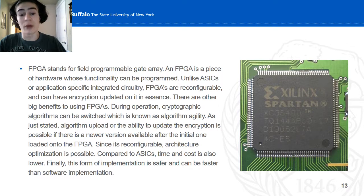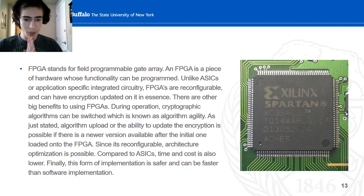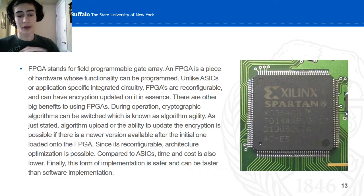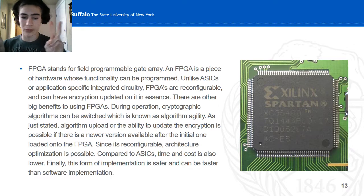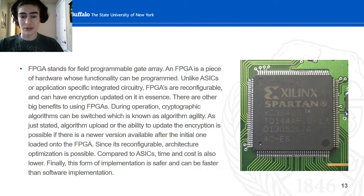FPGAs are Field Programmable Gate Arrays — pieces of hardware whose functionality can be programmed, unlike ASICs, which are application-specific. Basically, FPGAs are reconfigurable. This introduces versatility because, on the fly, cryptographic algorithms can be switched. Concurrent-based algorithms are agile. Implementation on FPGAs is safer and faster than a software implementation. When encryption is implemented in software, it's possible for keyloggers or other roundabout methods to be used to obtain the data.